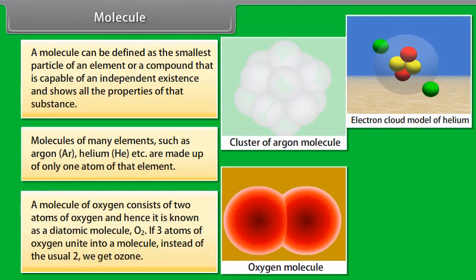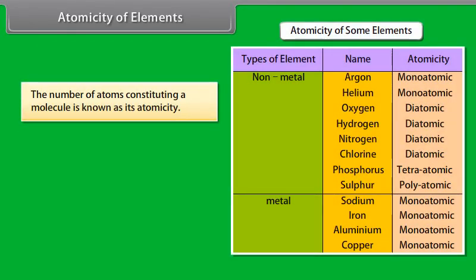Each element has a name and a unique chemical symbol. For example, Argon Ar, Chlorine Cl, Zinc Zn, etc.